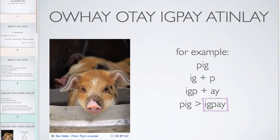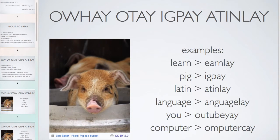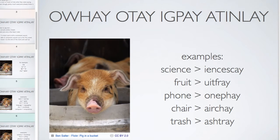There's a cute little pig in a bucket that I thought I should share. Other examples: 'Urn-lay', 'Ig-pay', 'Aten-lay', 'Angui-lay' — you can start to hear it doesn't quite sound like a different language when you have long words. I specifically stated that you move all consonants up to the first vowel to the end. So science would be 'Ience-say', fruit would be 'Uit-fray', phone would be 'One-phay', chair would be 'Air-chay'. One popular example is trash becomes 'Ashtray', where it actually becomes a different word in the English language. There aren't very many Pig Latin words that become other English words, but that is one commonly known example.